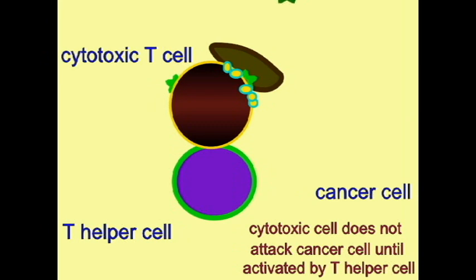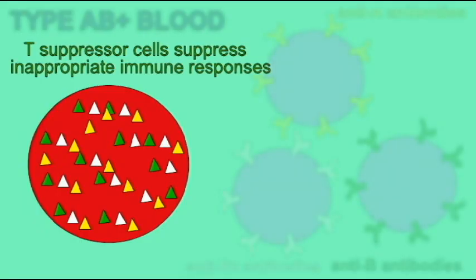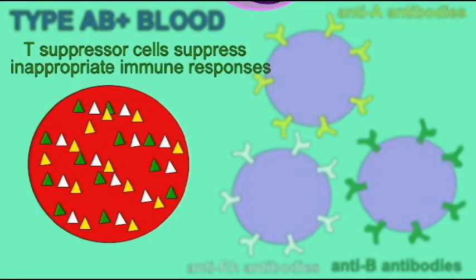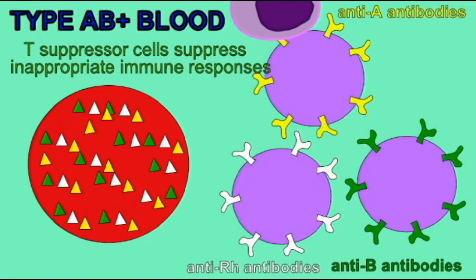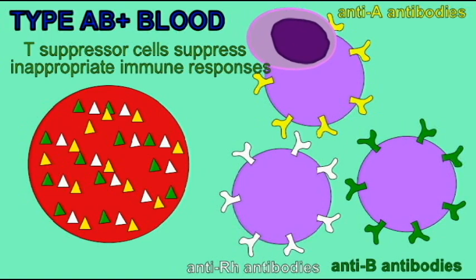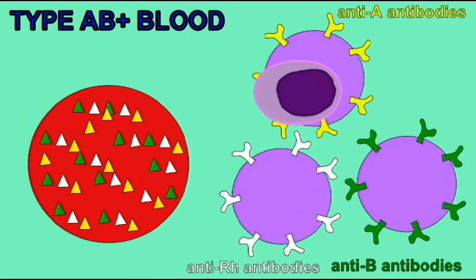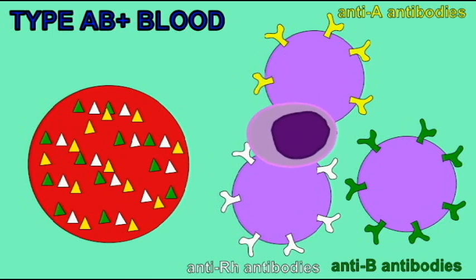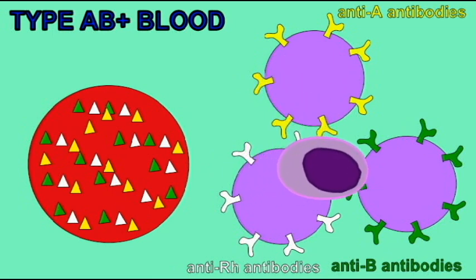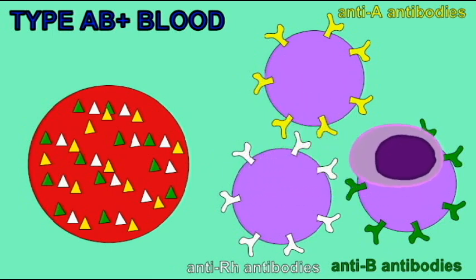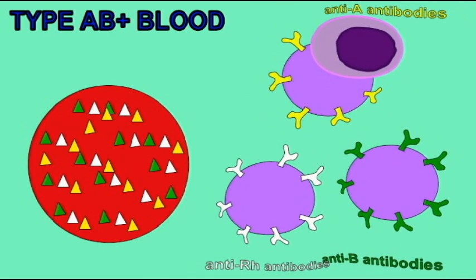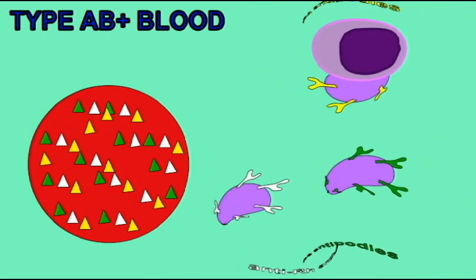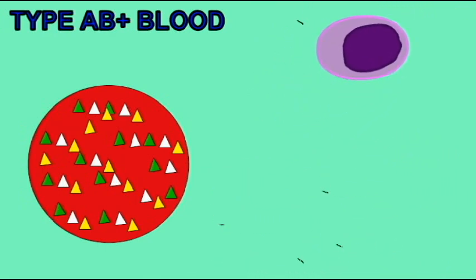There are suppressor T cells, which are capable of suppressing immune reactions. This is important because we do not want immune reactions which are inappropriate, say autoimmune diseases which react to cells. We also want to control antibody production, say after an infection is over. So there are a number of scenarios in which we need to suppress inappropriate immune responses.